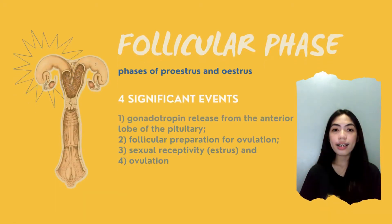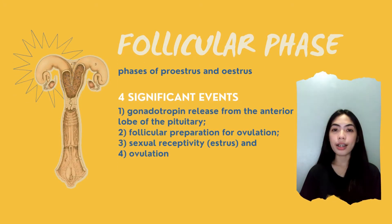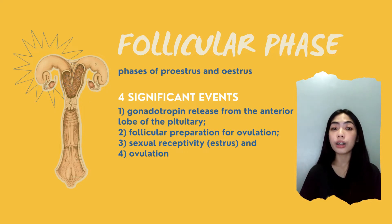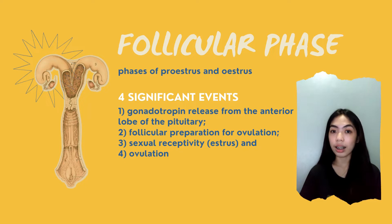Follicular phase. The phases of proestrus and estrus may collectively be referred to as the follicular phase. During the follicular phase, four significant events take place: gonadotropin release from the anterior lobe of the pituitary, follicular preparation for ovulation, sexual receptivity, and ovulation.